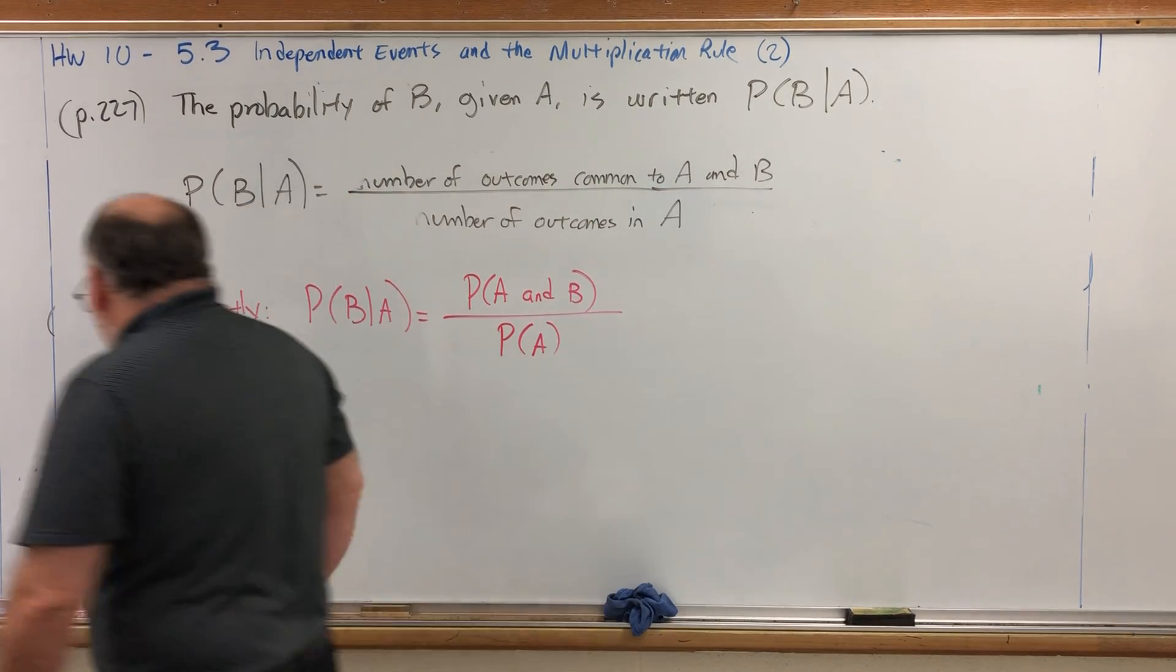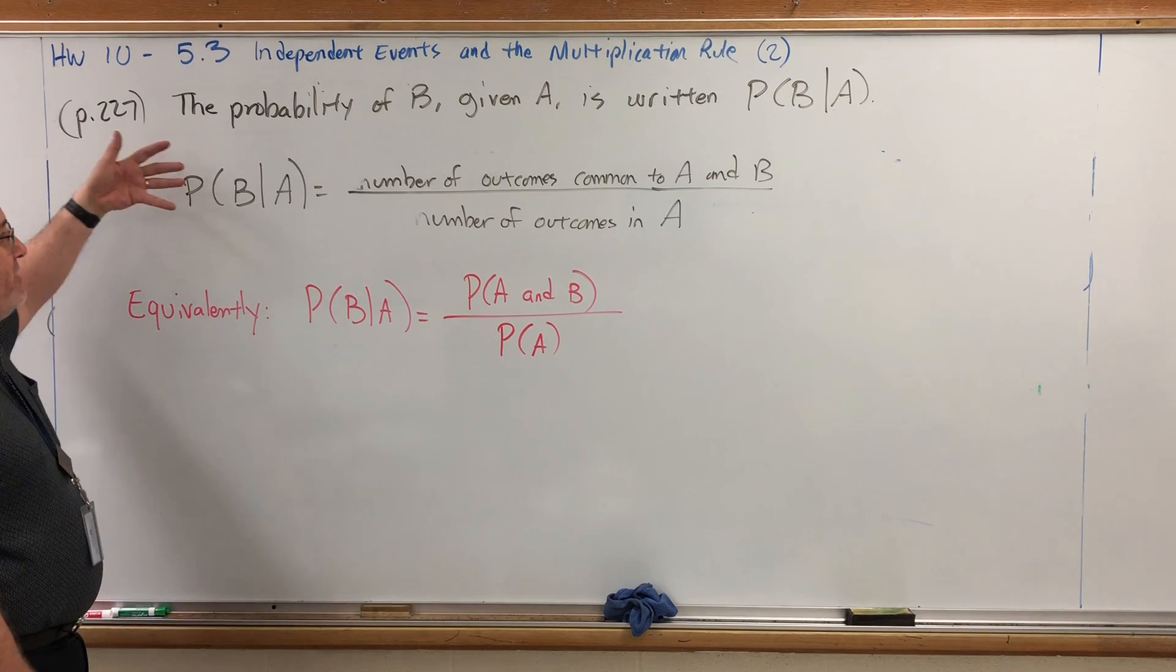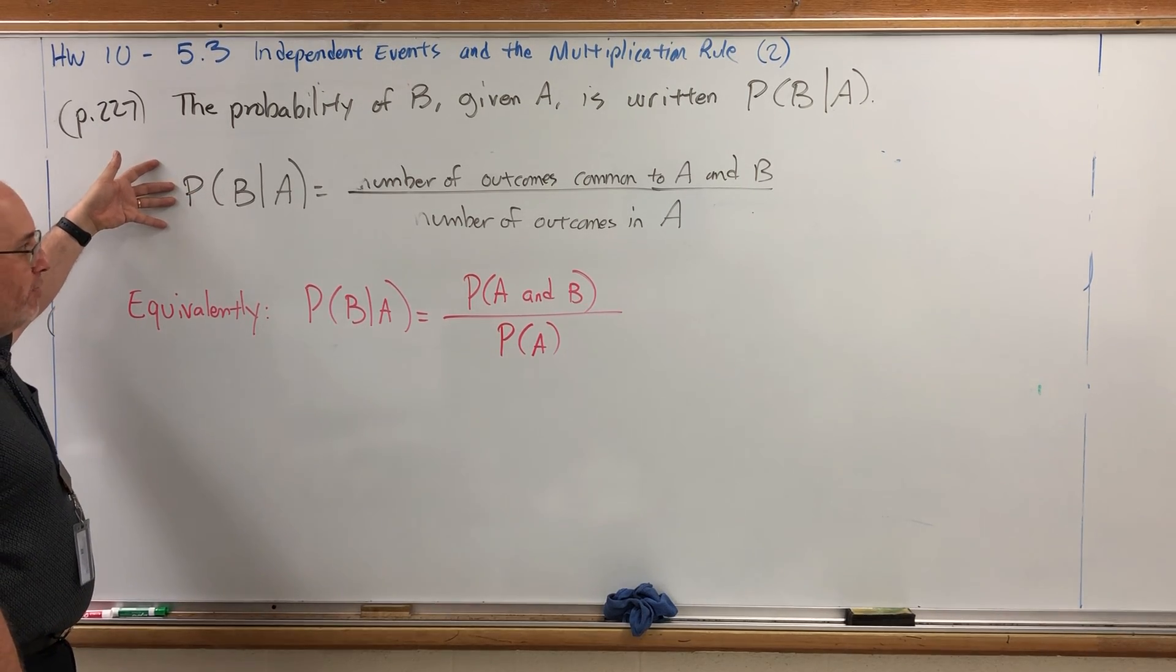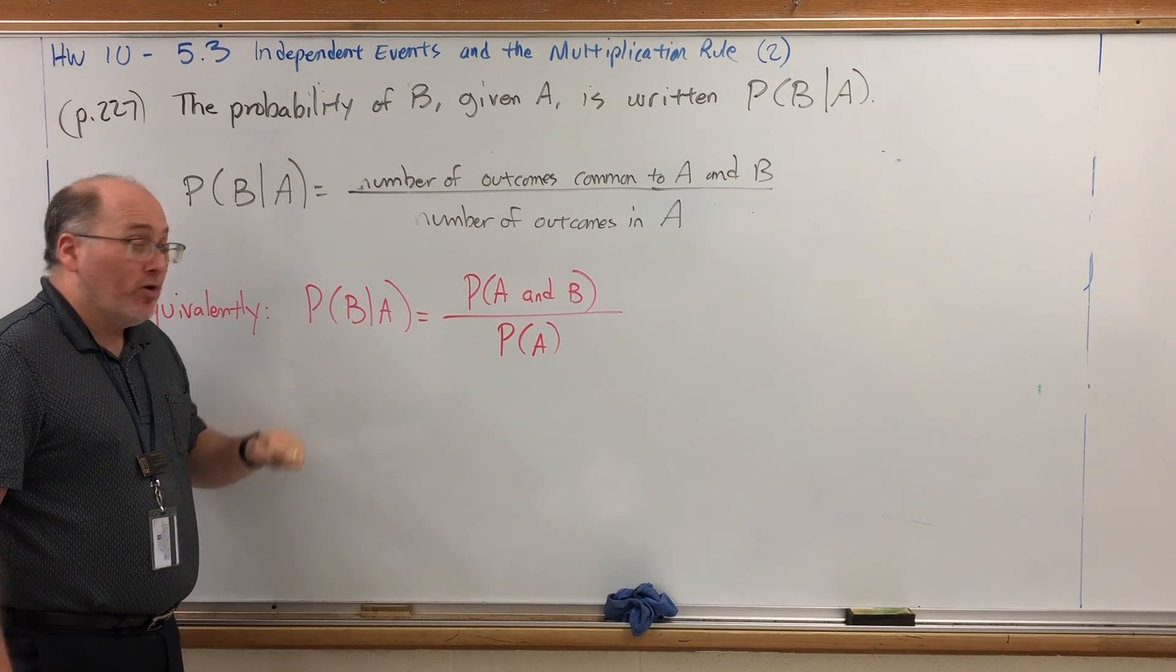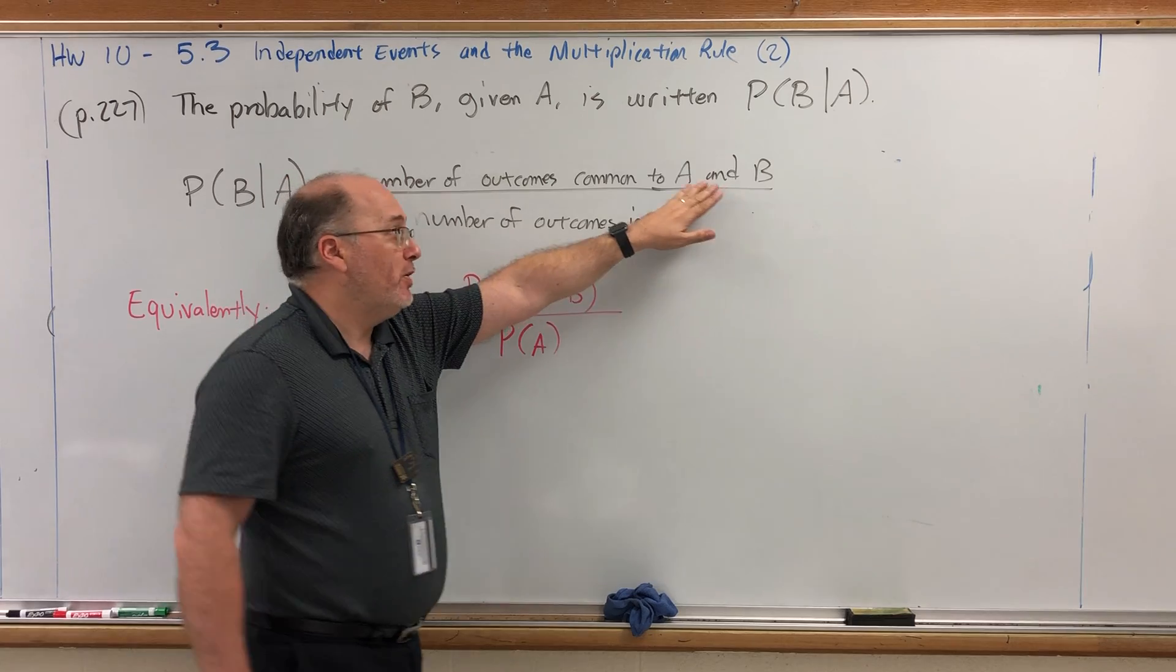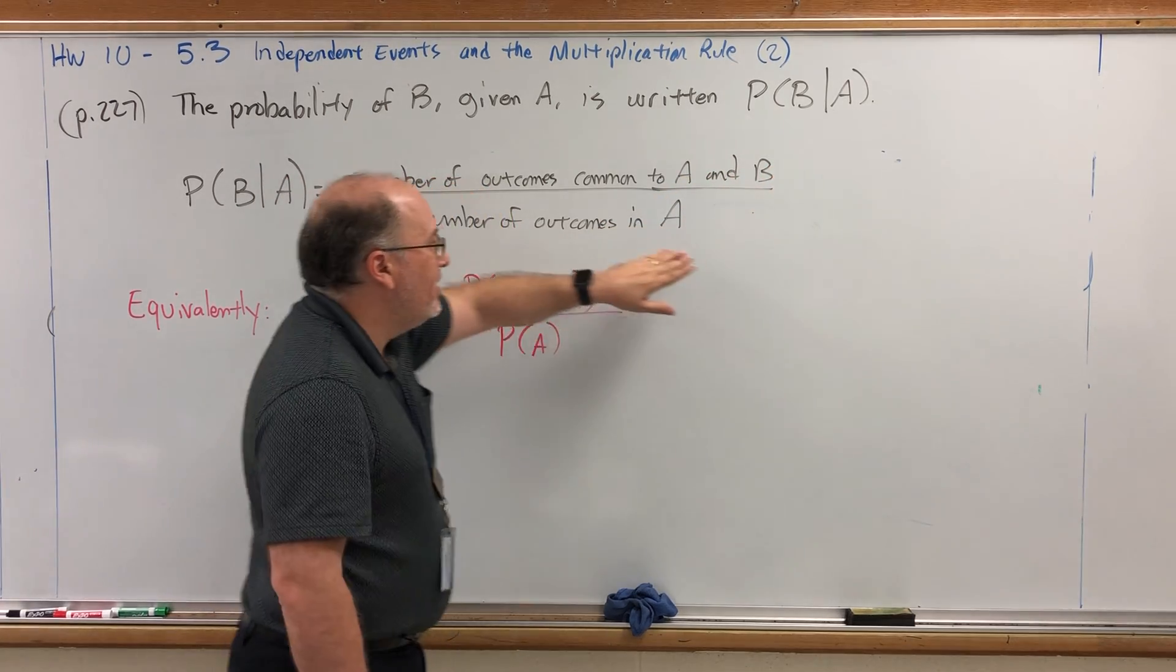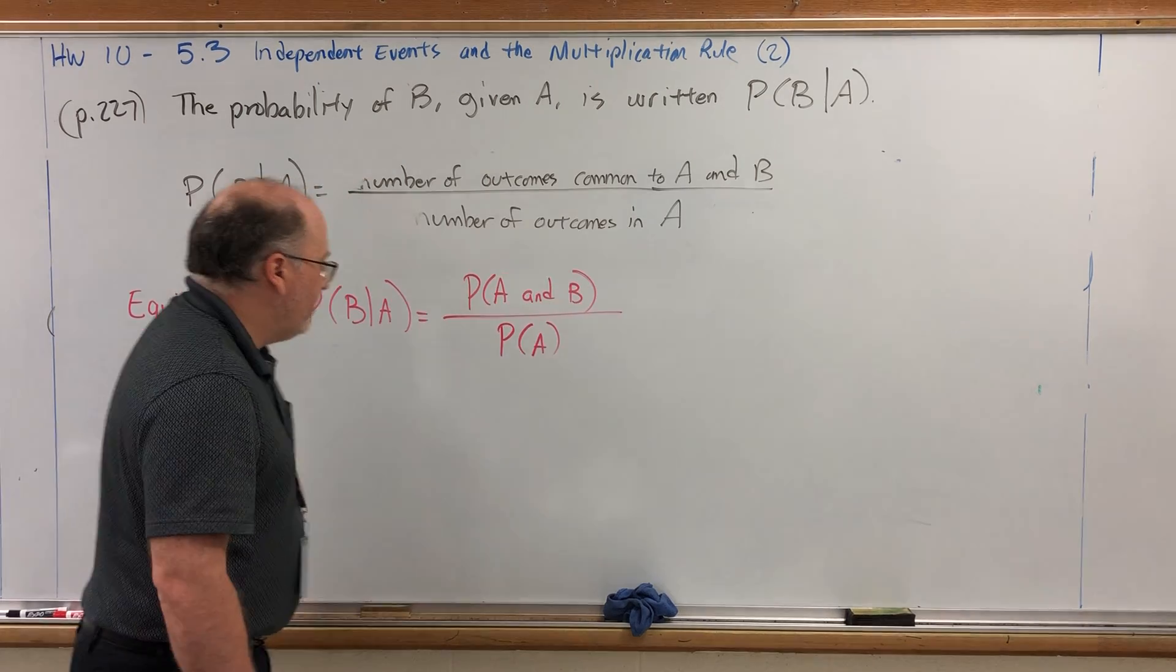Actually, before we get to our homework question, why are we writing this rule in two different ways? If you understand what it means to be a conditional probability, why is it necessary to write it in terms of more probabilities? Why not just count how many outcomes belong to both events simultaneously compared to the number of outcomes that belong to the condition? Well...